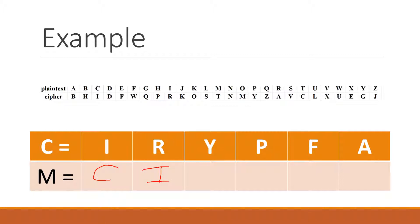Carrying this through, y will map to p, p will map to h, f will map to e, and a will map to r. So given the ciphertext and the map, we found our plaintext message and it's "cipher".